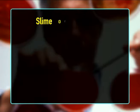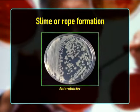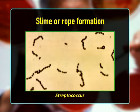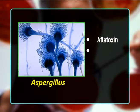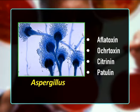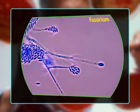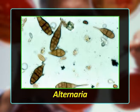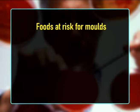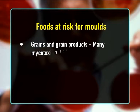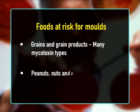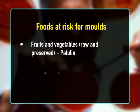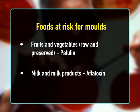Gas formation by Leuconostoc and Lactobacillus; slime or rope formation by Enterobacter and Streptococcus. Molds: some strains produce mycotoxins under certain conditions — Aspergillus produces aflatoxin; Cladosporium and Alternaria are also implicated. Foods most at risk for molds include grains and grain products, peanuts, nuts and pulses containing aflatoxin, and fruits and vegetables.